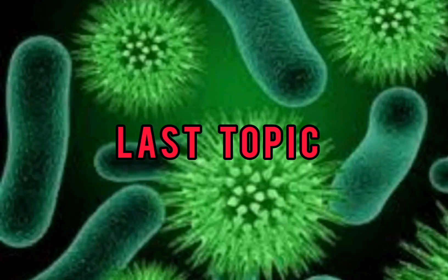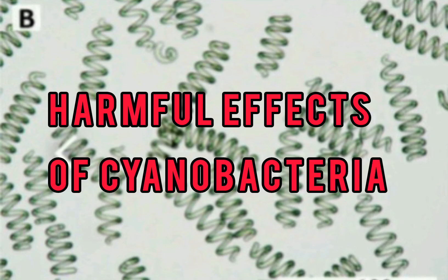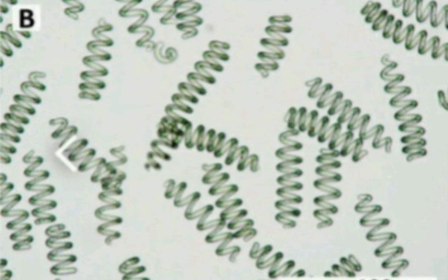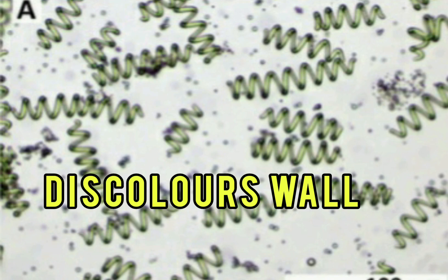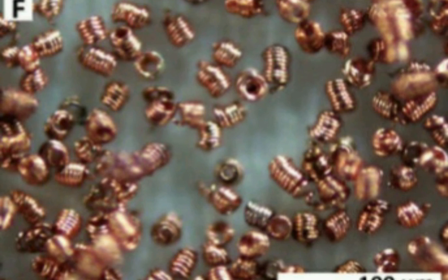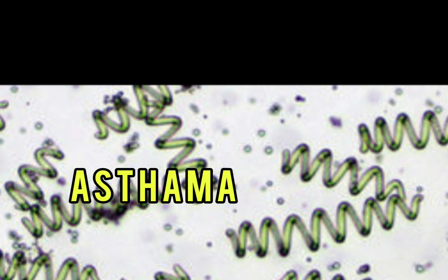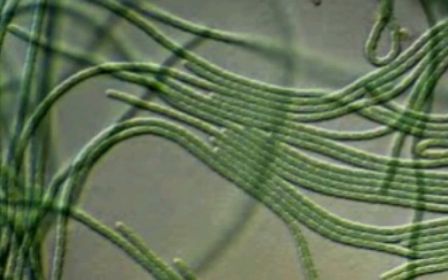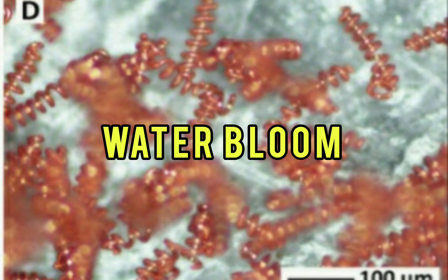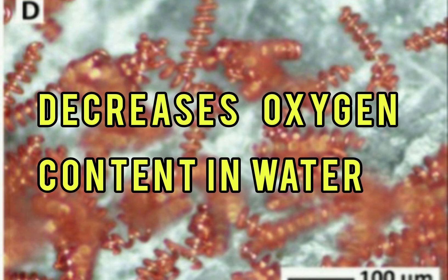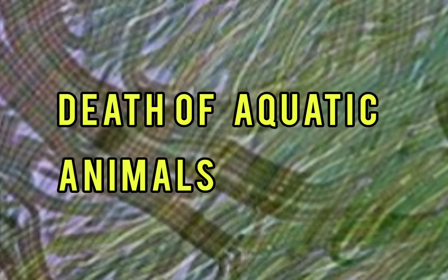The harmful effects of cyanobacteria include discolouring the walls and roofs of buildings, monuments, and statues. Oscillatoria may cause asthma and gastrointestinal problems by releasing its toxins. Growth of Oscillatoria in water bodies indicates pollution by organic matter. Additionally, excessive growth of cyanobacteria may cause water blooms, decreasing the oxygen level in the water and causing the death of aquatic animals.